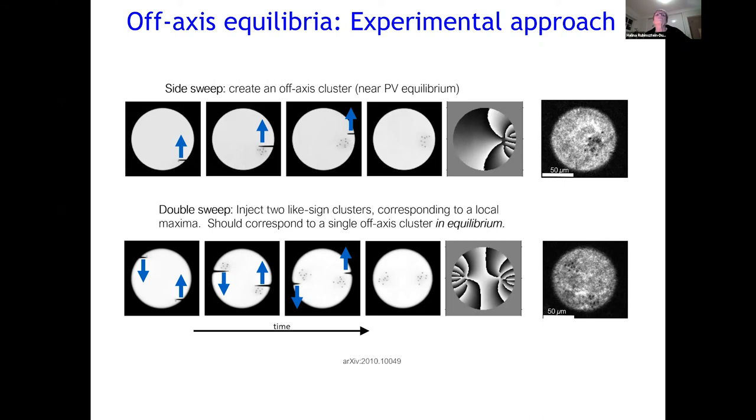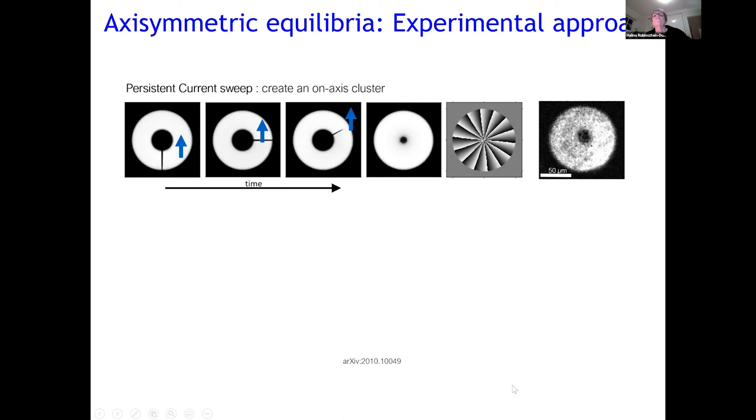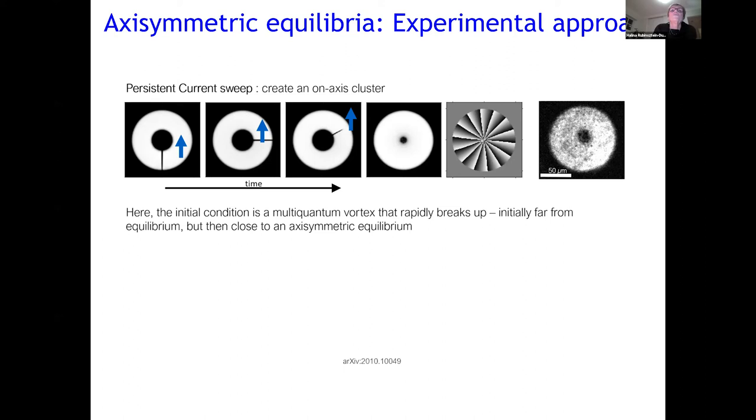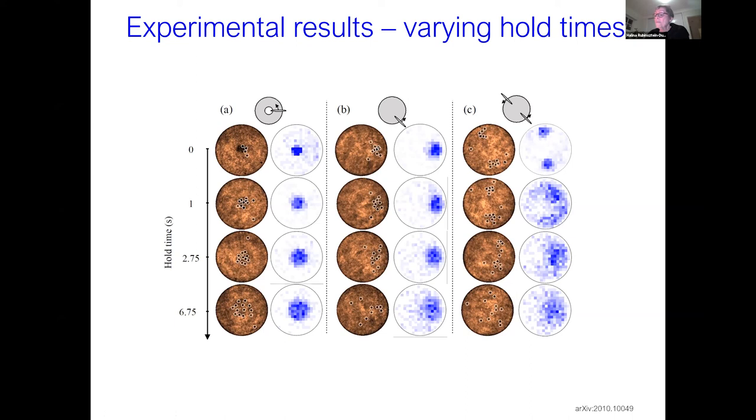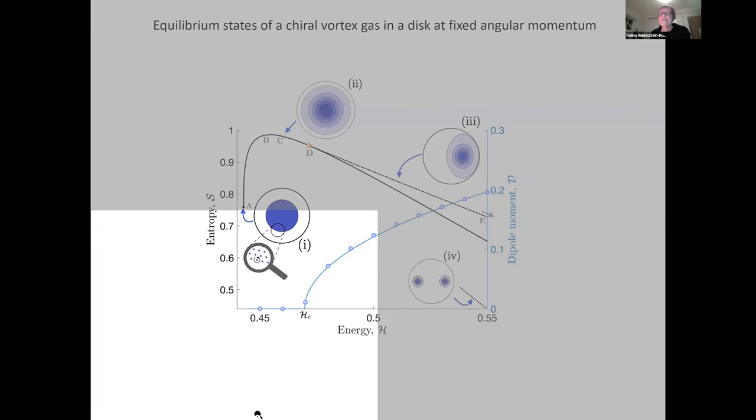I'll go directly to the experimental results. So what we do is we do a side sweep. So we create an off-axis cluster. And what you can see here is the sequence of side sweep near point vortex equilibrium. And this is the phase, and this is the created chiral structure. And then I can have double sweep. And you see the result of it. And then I can have persisted the current sweep. And so we have the initial condition is multi-quantum vortex that rapidly breaks up, initially far from equilibrium, but then close to the axial symmetric equilibrium. And these are the experimental results here, which you can see. And yeah, five minutes, yes.